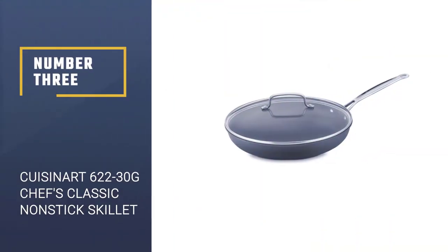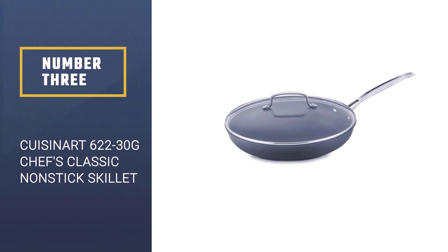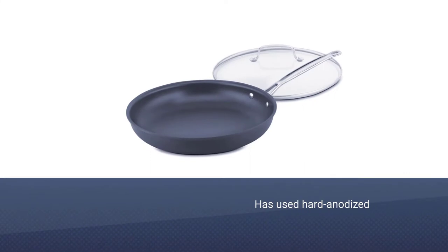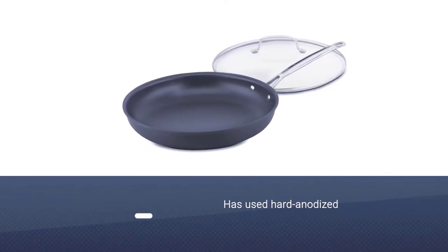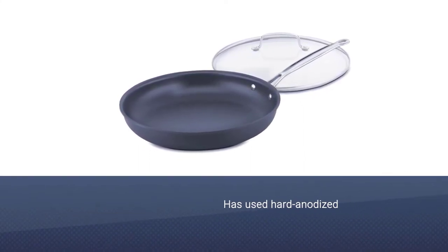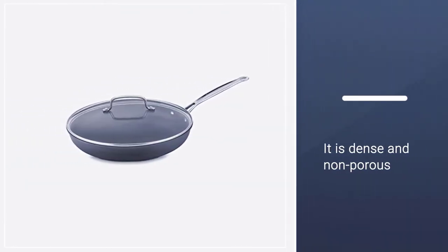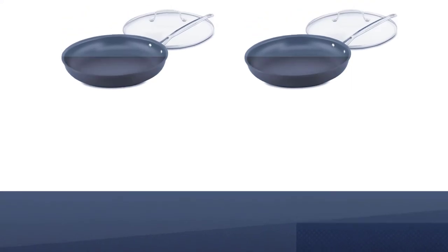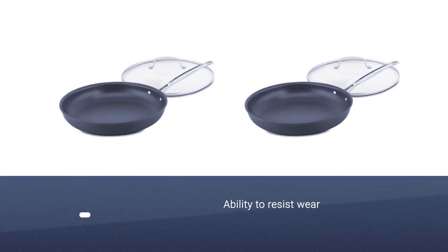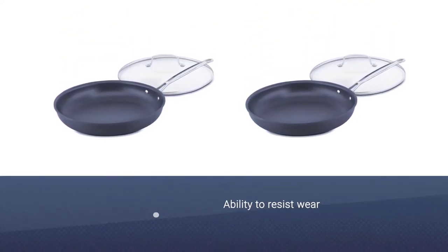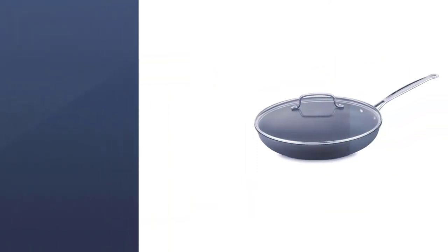Number three: Cuisinart 622-30G Chef's Classic nonstick skillet. The reason why Cuisinart has used hard anodized to make this 12 inch skillet is that hard anodized is harder than stainless steel. Plus, it is dense and non-porous, not to mention having the ability to resist wear. Because of all these traits, they give superior durability and professional performance.